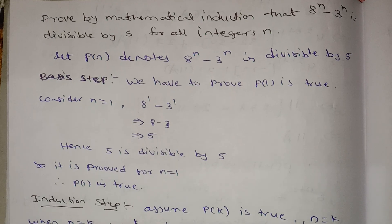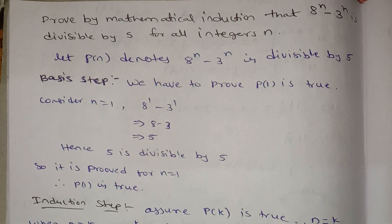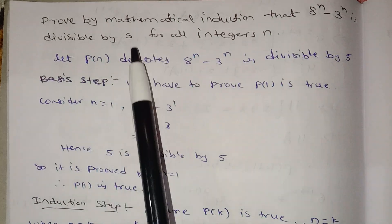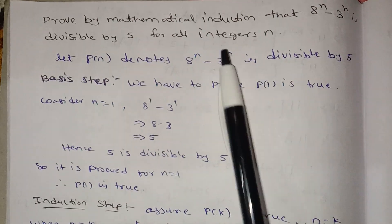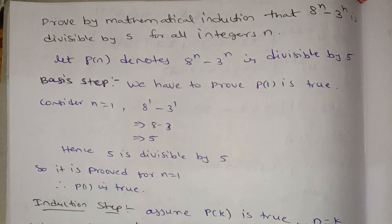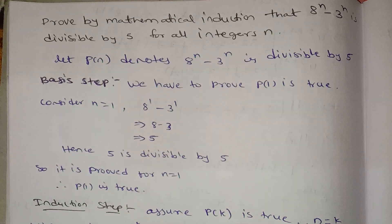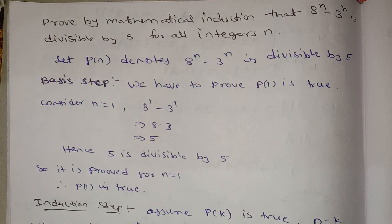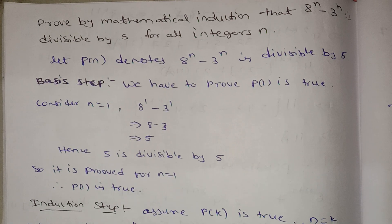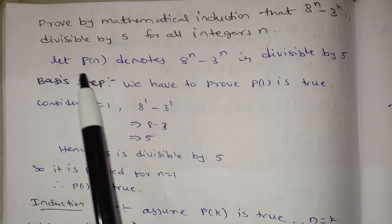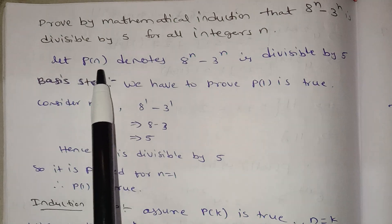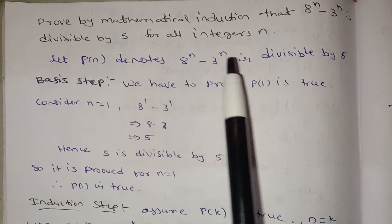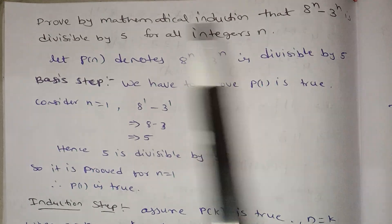Now the next problem is: prove by mathematical induction that 8 power n minus 3 power n is divisible by 5, for all integers n. Let P of n be the propositional statement that 8 power n minus 3 power n is divisible by 5.